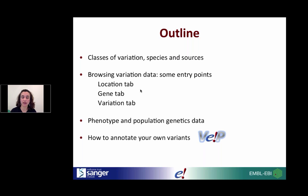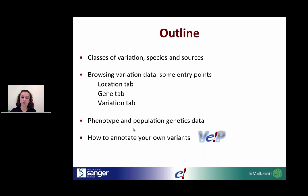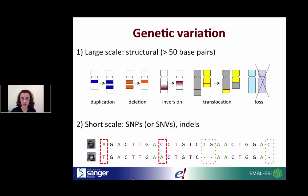This is the outline for my talk. I'm going to go through the different classes of variation data, the species we've got data for, and where this data comes from. I will show you some places using the browser where you can explore this data — mainly from the Location tab, Gene tab, and the Variation tab, which is new. I will also cover phenotype data and population genetics, and towards the end I'll talk about the VEP, which allows you to annotate your own variants.